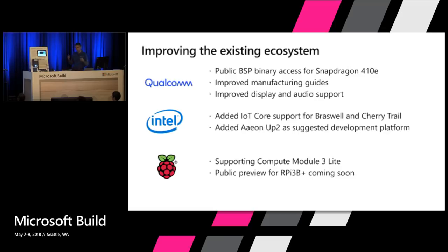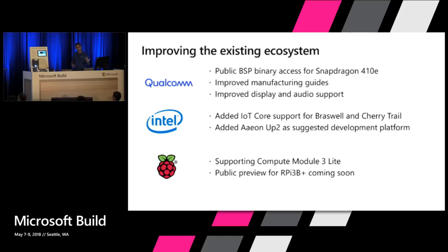With Intel, we delivered on a promise made last year at Build to expand the Intel ecosystem of silicon across their entire portfolio — from i3, i5, i7 to Atom, Celeron, and Pentium solutions. We've completed work on the low-cost and low-power silicon solutions from Intel. The Braswell and Cherry Trail solutions are now supported on IoT Core. We also worked with partners like AAEON that developed the UP Squared board — used for both prototyping and production by developers in over 150 different countries — and that's supported on IoT Core and available today.